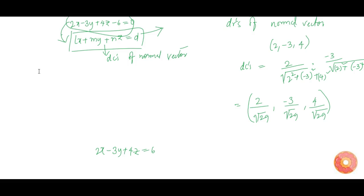Let us divide the equation by under root of 29. We get 2 by root 29 x minus 3 by root 29 y plus 4 by root 29 into z, which is equal to 6 by under root 29.